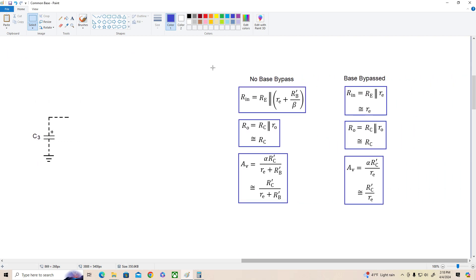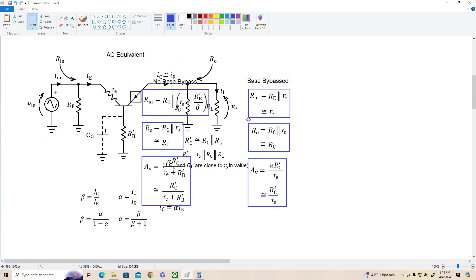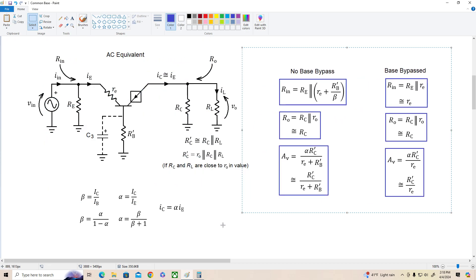And here they are. So let me copy and paste these over here, and there we go. If there's no base bypass cap included, these are the equations. Otherwise, if we bypass the base, this is what we've got.